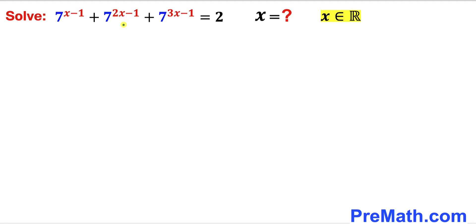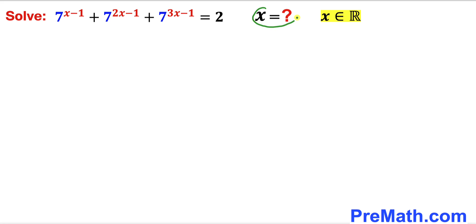Welcome to pre-math. In this video we are going to solve this given exponential equation: 7^(x−1) + 7^(2x−1) + 7^(3x−1) = 2. In other words we are going to find the value of x, and please bear in mind that our x values are going to be all real numbers.